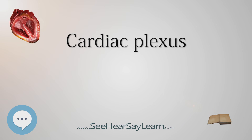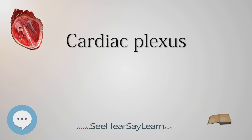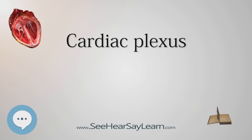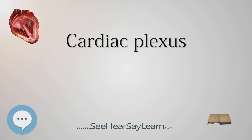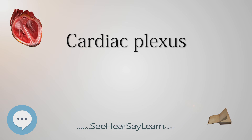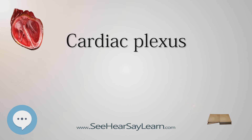The superficial part of the cardiac plexus lies beneath the arch of the aorta, in front of the right pulmonary artery. It is formed by the superior cervical cardiac branch of the left sympathetic trunk and the inferior cardiac branch of the left vagus nerve. A small ganglion, the cardiac ganglion of Risberg, is occasionally found connected with these nerves at their point of junction. This ganglion, when present, is situated immediately beneath the arch of the aorta, on the right side of the ligamentum arteriosum.